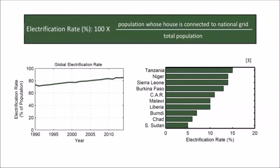You'll often hear about something called the electrification rate, defined as the percent of the population who has access to electricity at their house. There are several criticisms of this metric, which we'll get into later. Globally, the electrification rate has been rising over the past 20 years or so and presently sits around 85% or 86%. But of course, there's wide variation on a country-by-country basis — countries like Chad and South Sudan will have less than 10% of their households electrified, and many of these countries are found in sub-Saharan Africa.